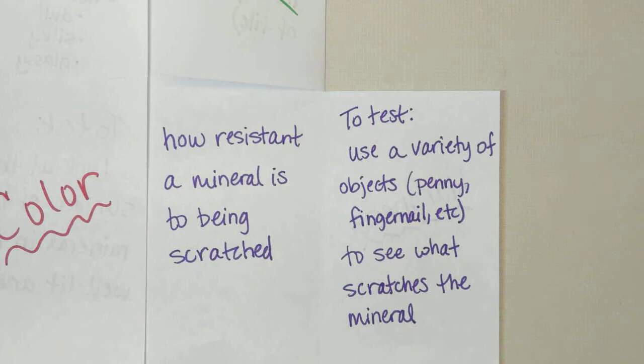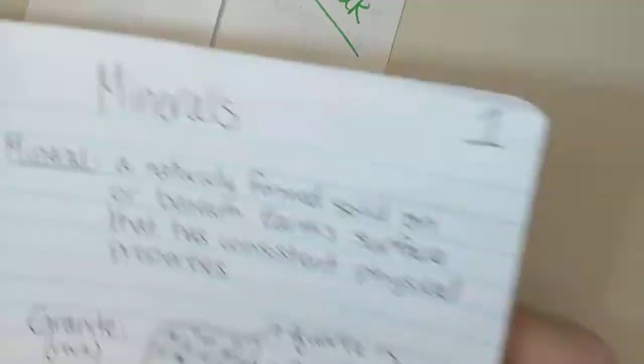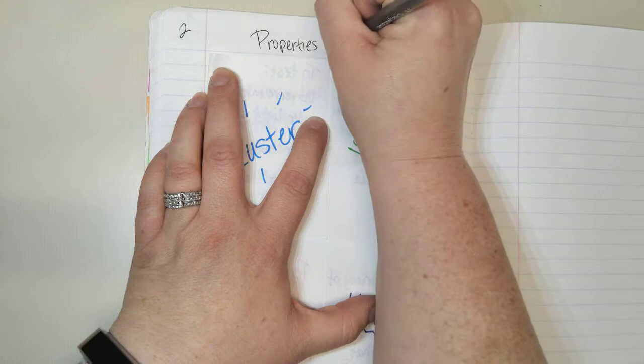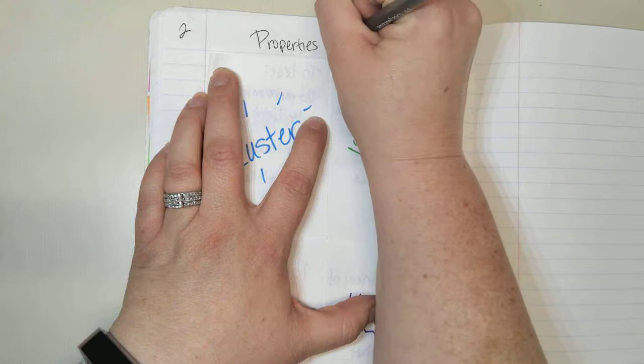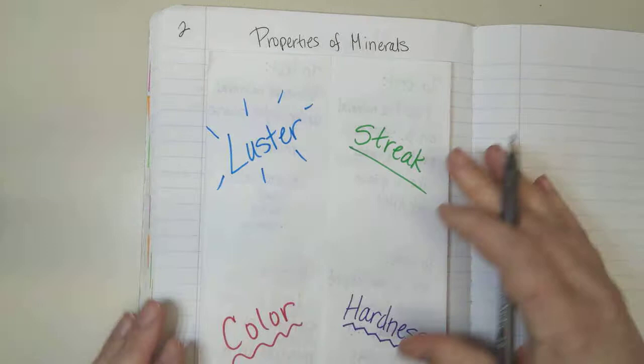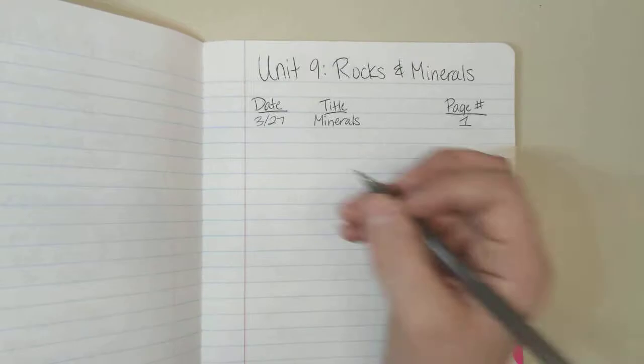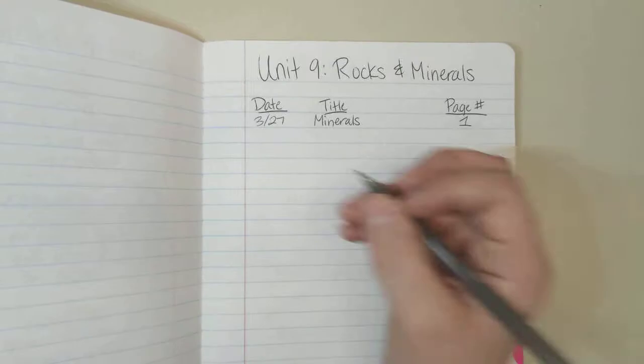We are going to keep this foldable on page 2 in our journal in the section that we set up yesterday. So right behind our minerals notes from yesterday, if you flip the left side page, it will be page 2. We can put a title, properties of minerals, and then go ahead and glue this to page 2. Once you have it glued to page 2, go ahead and go back to our table of contents that we set up yesterday, and add this entry. Today is the 28th. Our title, properties of minerals, and we just glued that on to page 2.